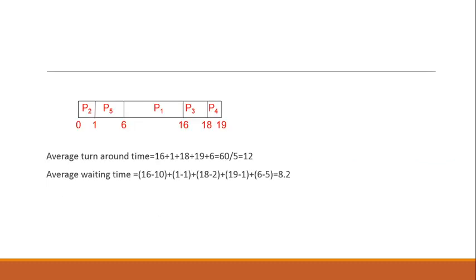The rest of the procedure remains the same as with FCFS and SJF. From the Gantt chart we generate a table for completion time, turnaround time, and waiting time. The completion times are: P1 = 16, P2 = 1, P3 = 18, P4 = 19, P5 = 6. From these completion times we can calculate turnaround time for each process.